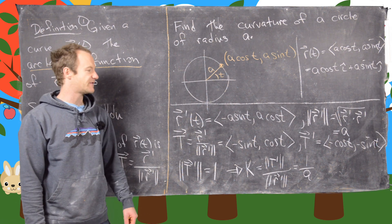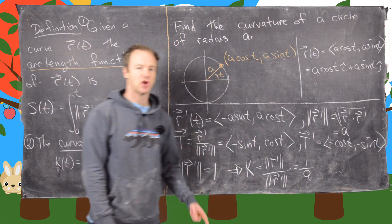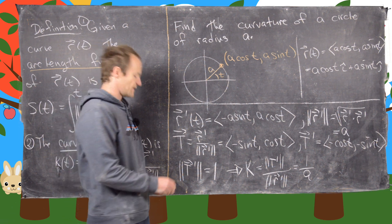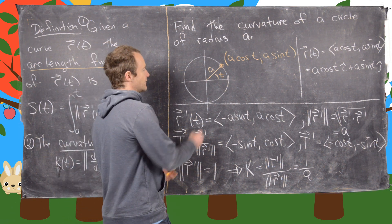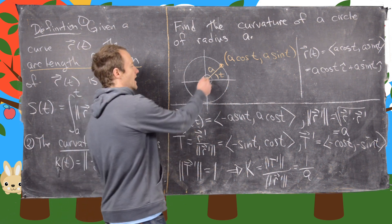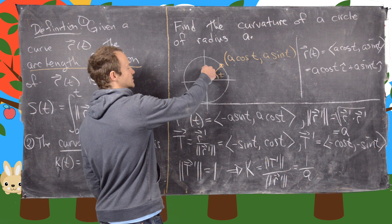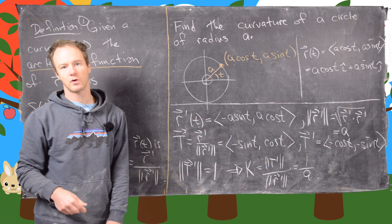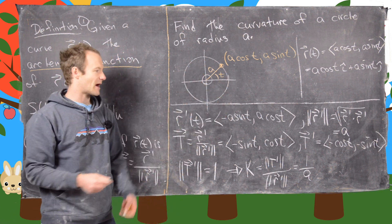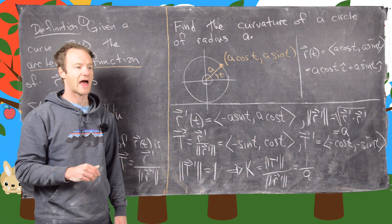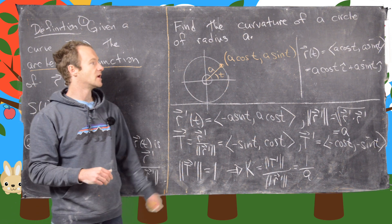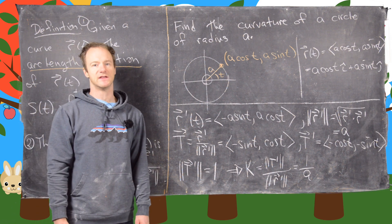Let's see if that makes sense. As the radius gets larger, the curvature gets smaller, which makes sense because a tightly bound circle has a tangent vector changing direction much more quickly than a circle with a large radius. Just think about the earth — we can barely notice its curvature at all because the radius is so large. This is a good place to end the video.